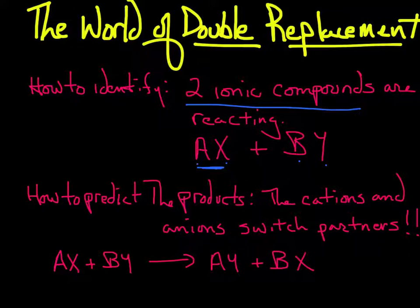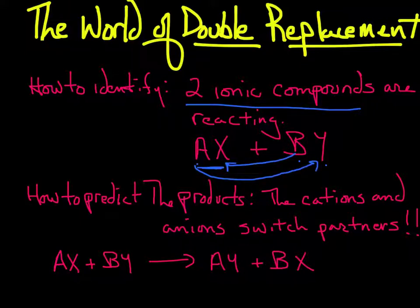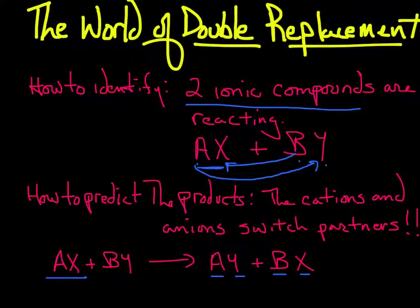What's going to happen is the cations and anions are going to switch partners — kind of like that bad prom example. So A is going to go to Y, and B is going to combine with X. I write them cation first, anion second. Notice how X was paired with A, and now X is paired with B.